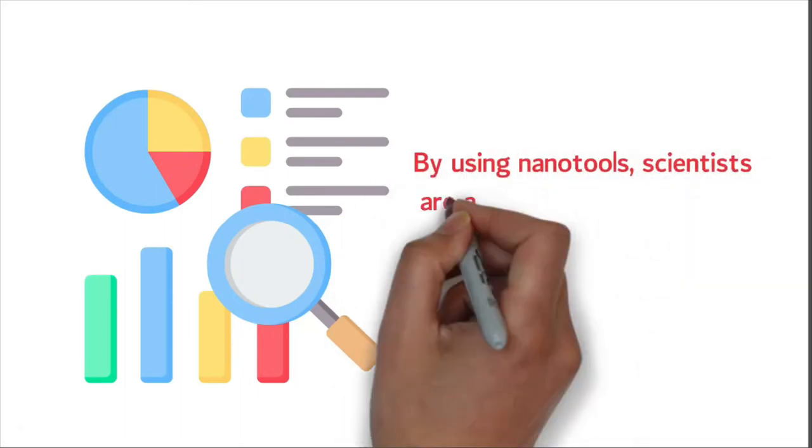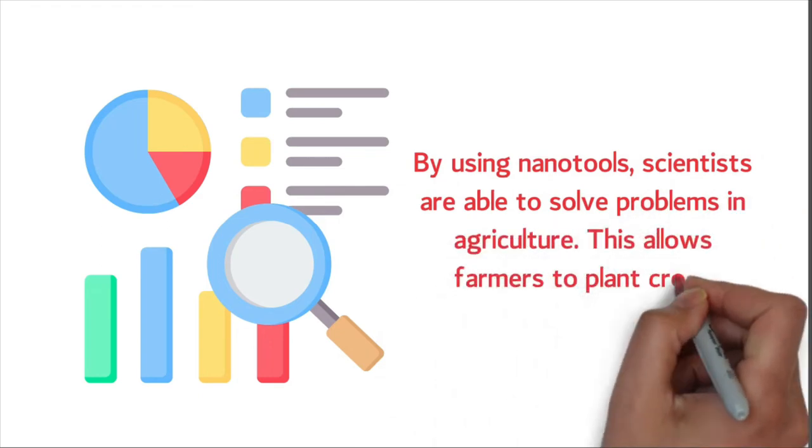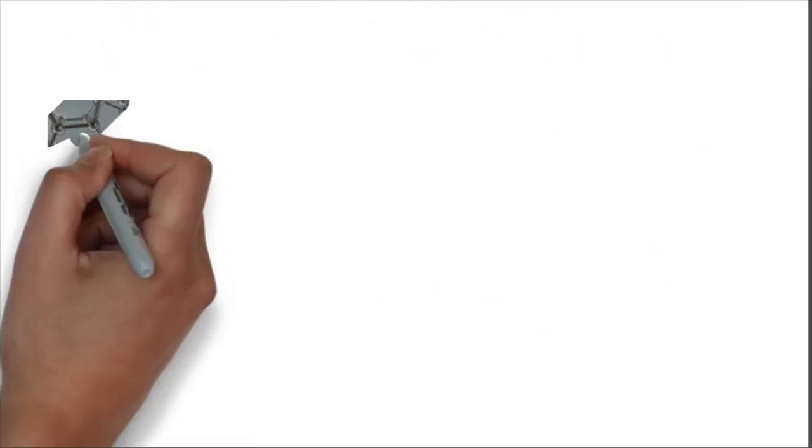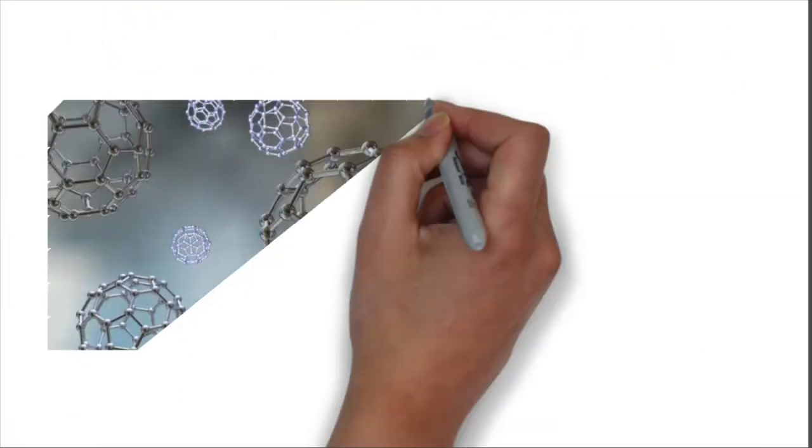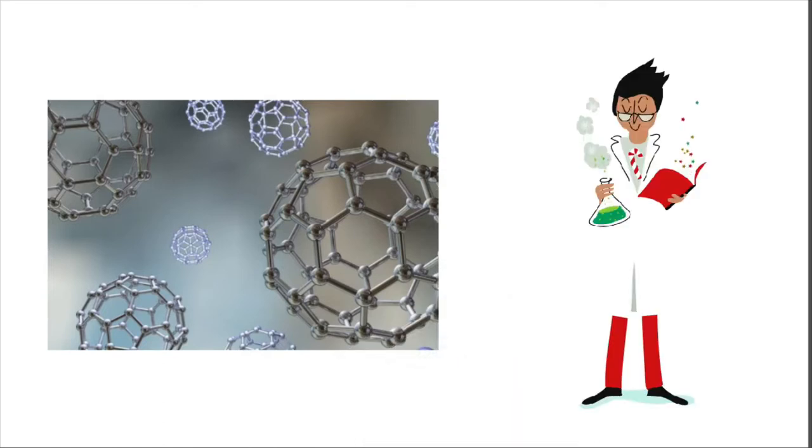By using nanotools, scientists are able to solve problems in agriculture. This allows farmers to plant crops without harming the plants. When something is really small nano, it can do new things because it is different from larger particles. This special size difference made it possible for scientists to do new things for plants and animals on farms.